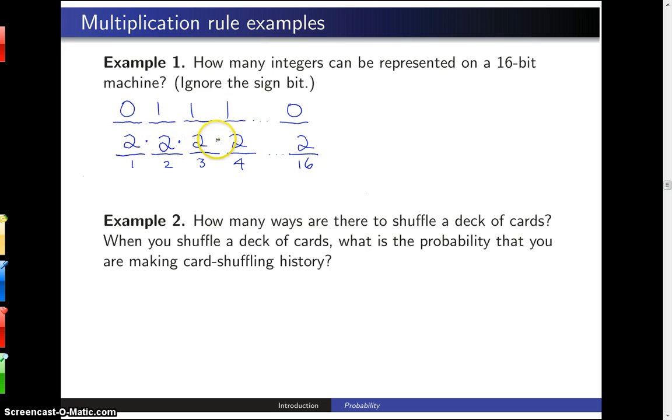Finally, the multiplication rule says that these 16 2's should be multiplied together. So the answer to the problem is 2 raised to the 16th power. And that works out to 65,536 different integers that can be represented on a 16-bit machine when the sign bit is ignored.